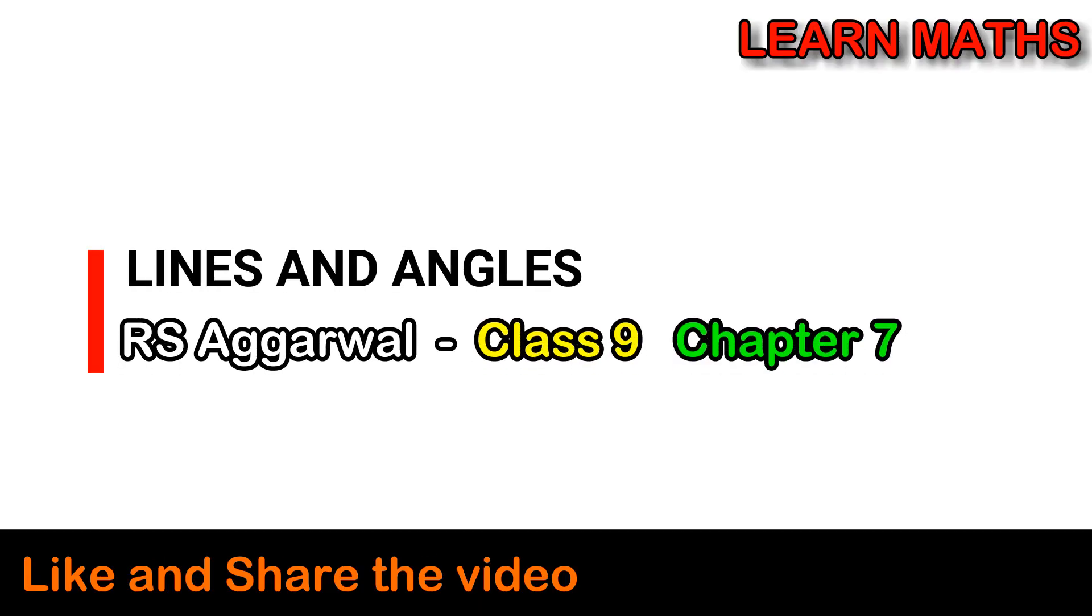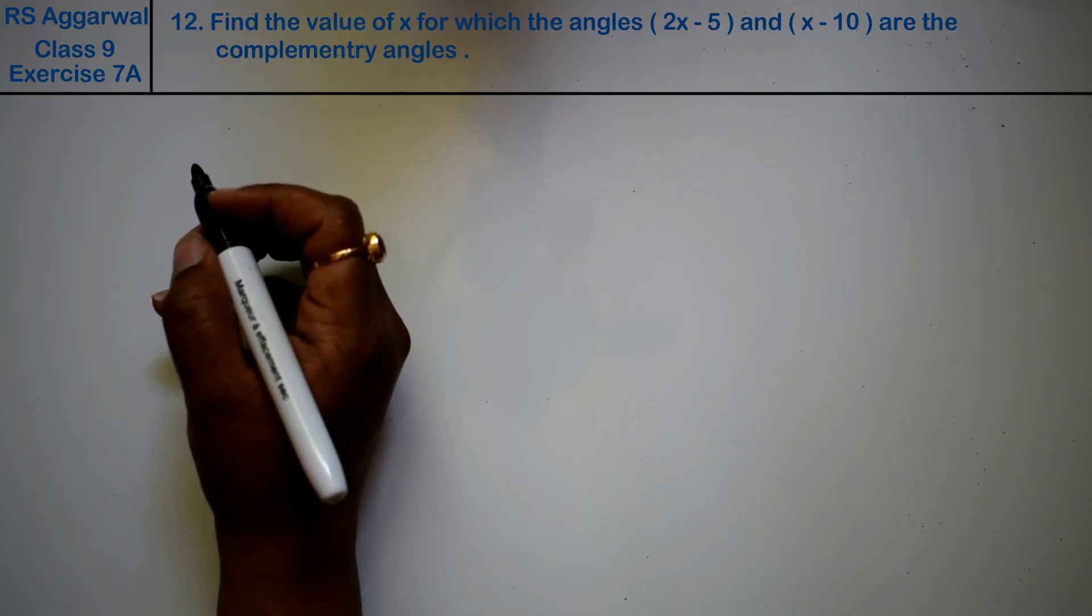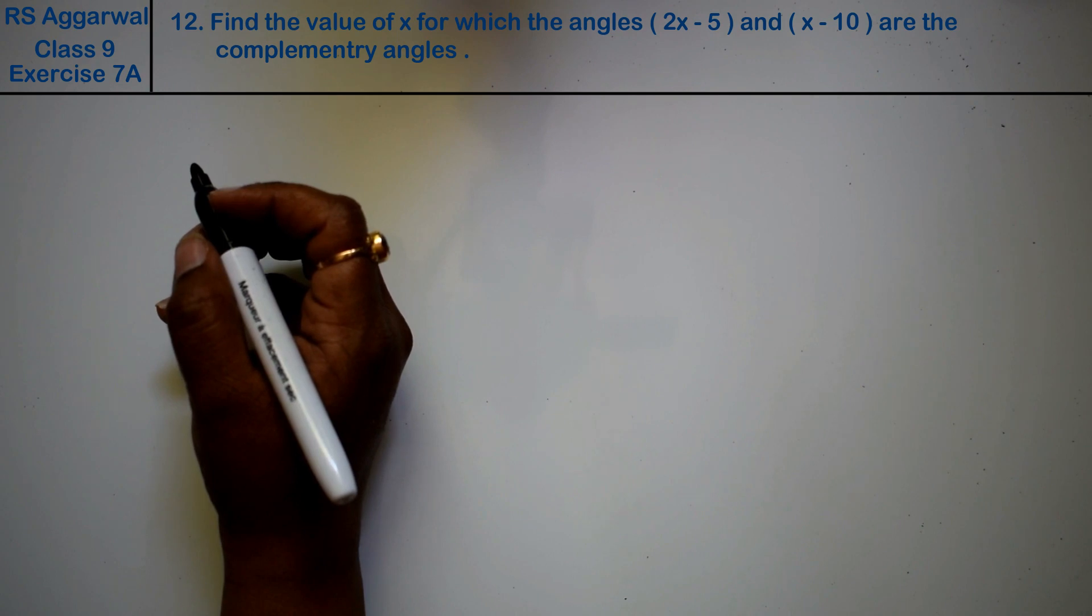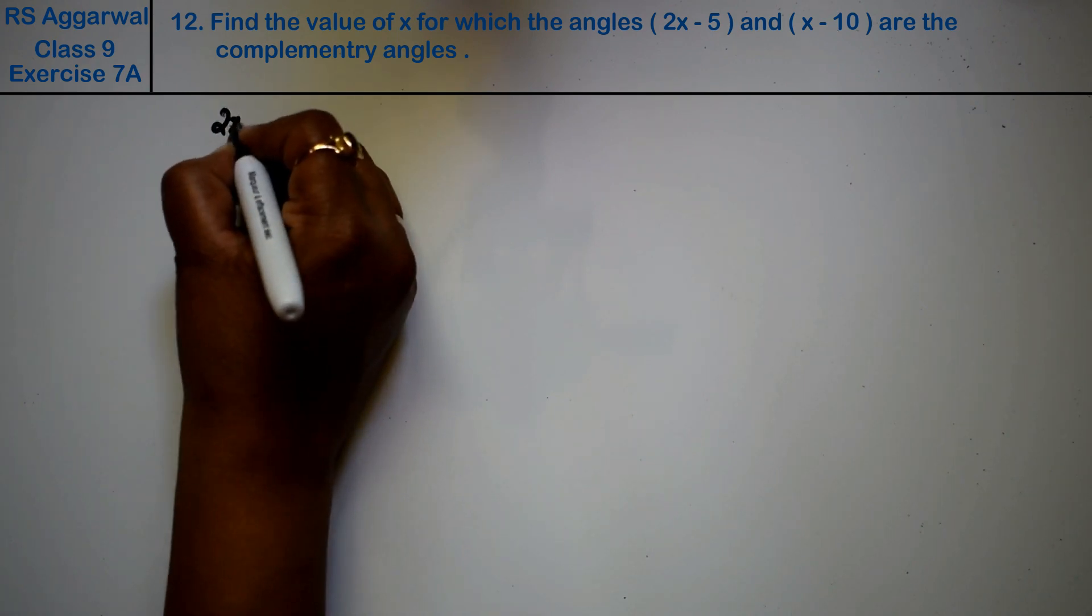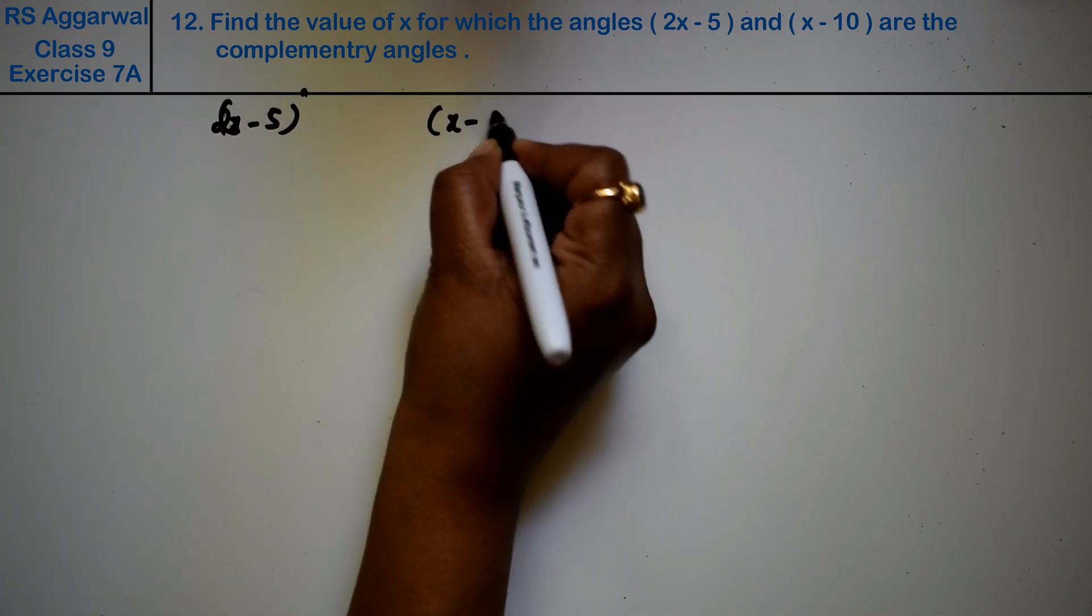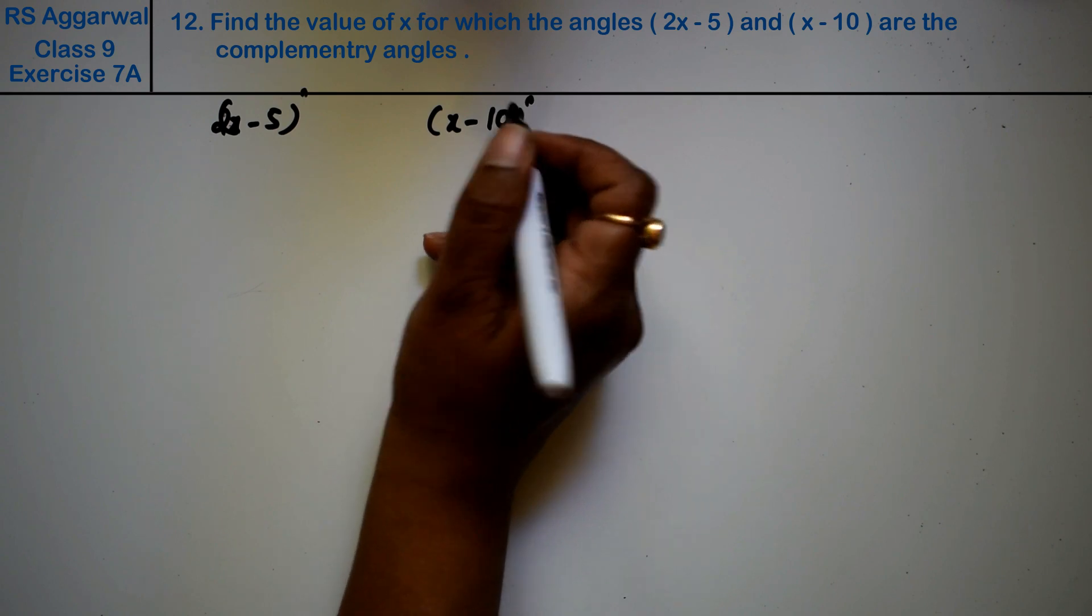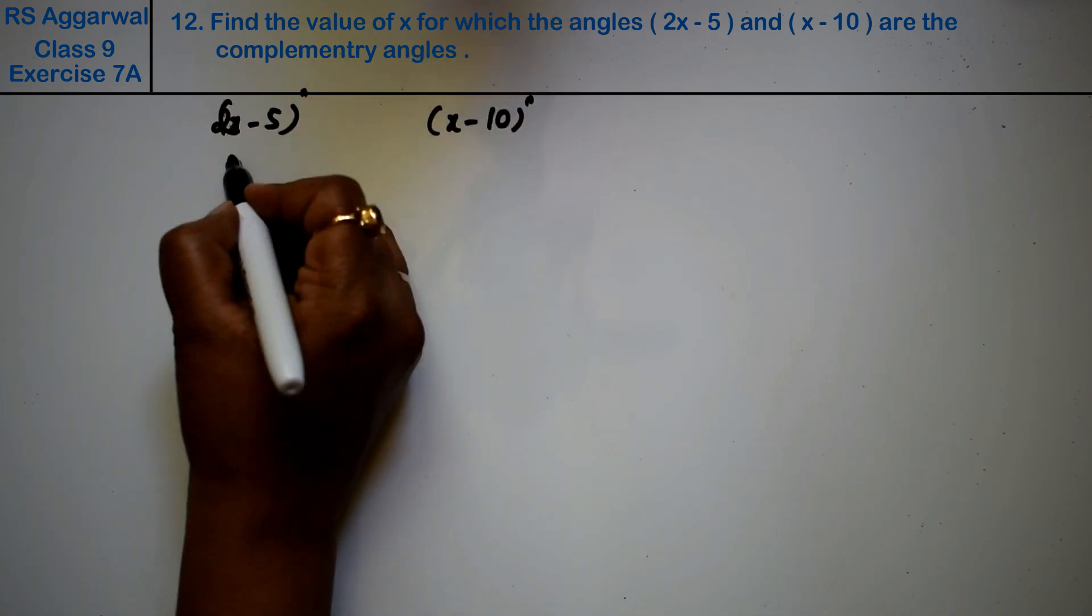Let's do question number twelfth of exercise 7A, that is lines and angles. Find the value of x for which the angles (2x - 5)° and (x - 10)° are complementary angles. These two are complementary angles, so we need to find the value of x.